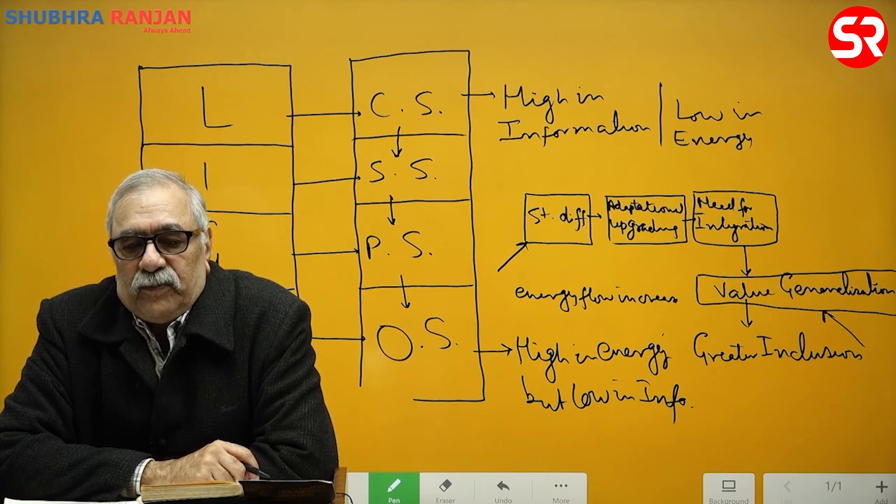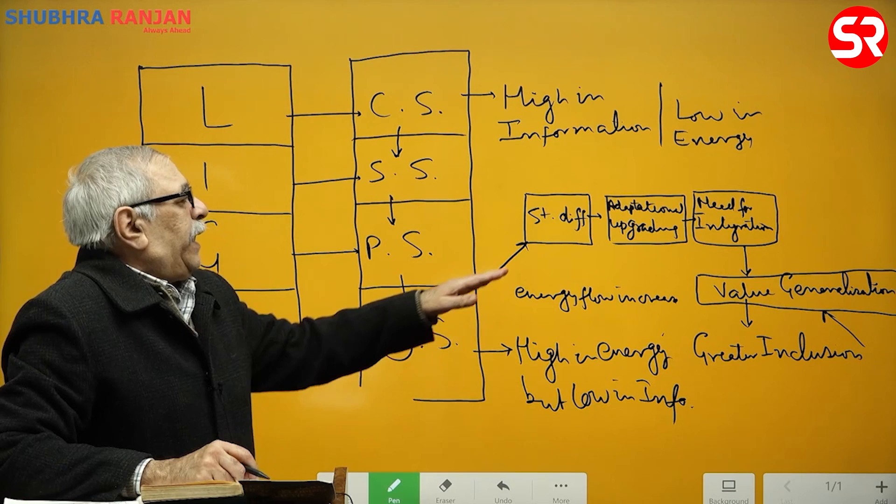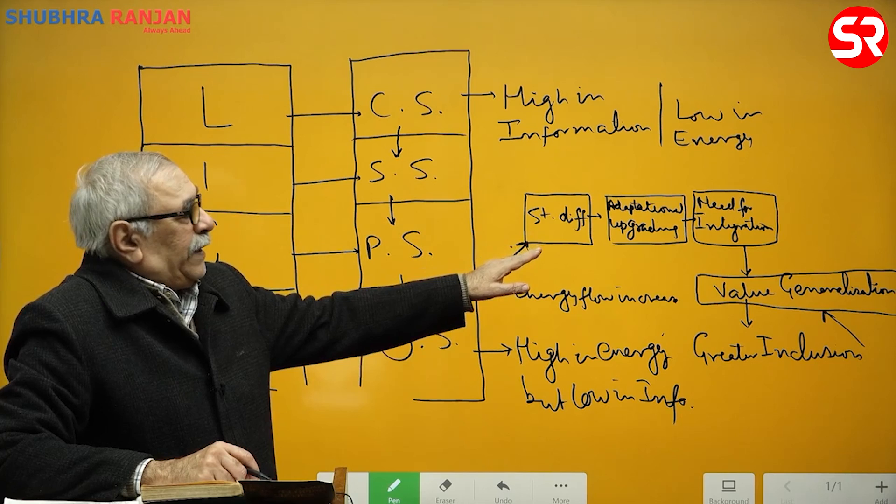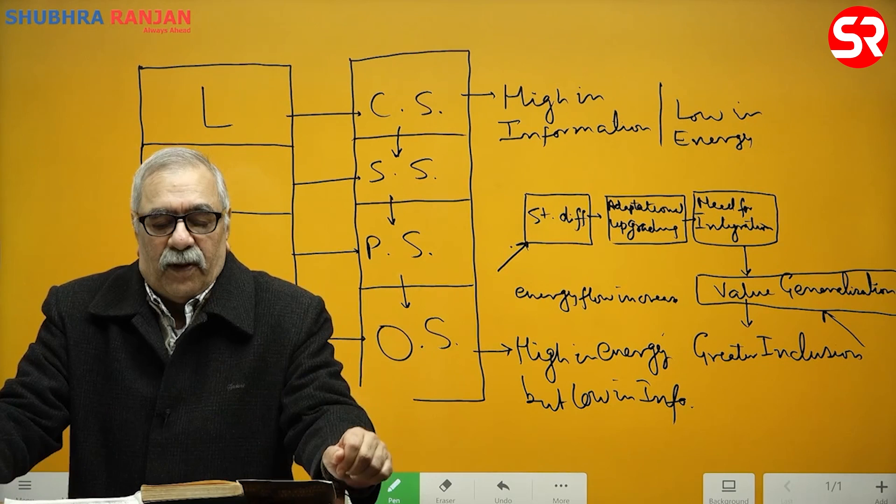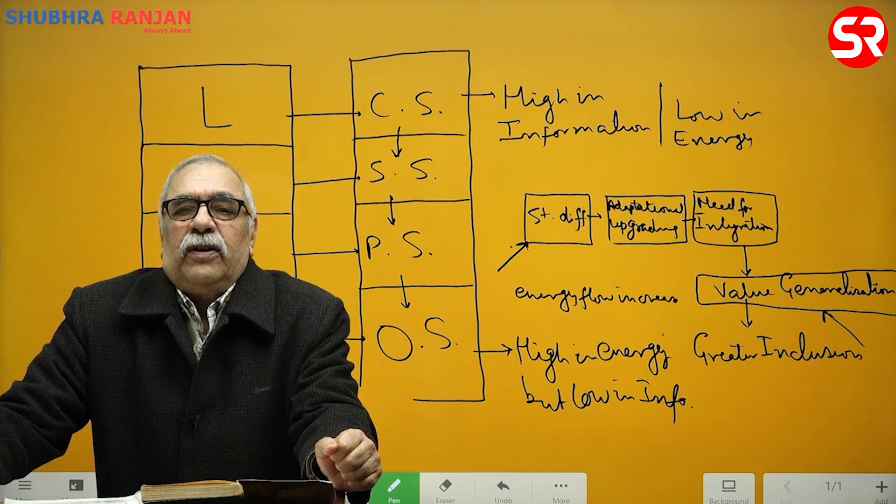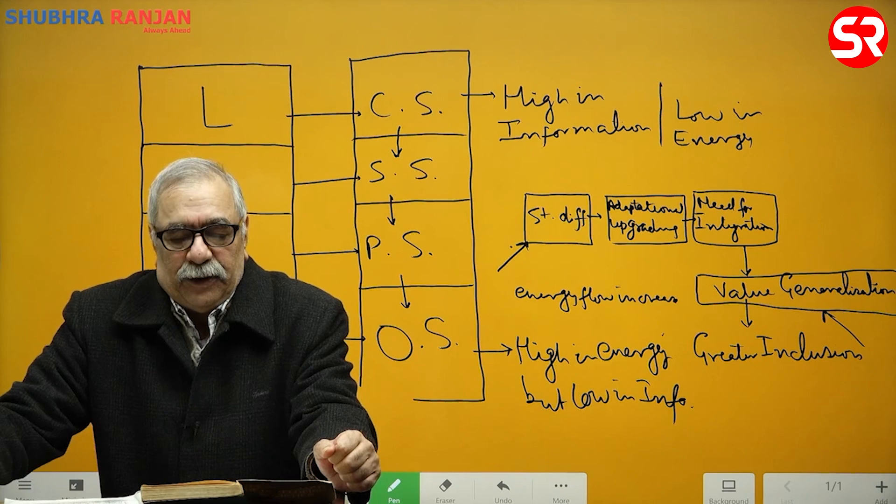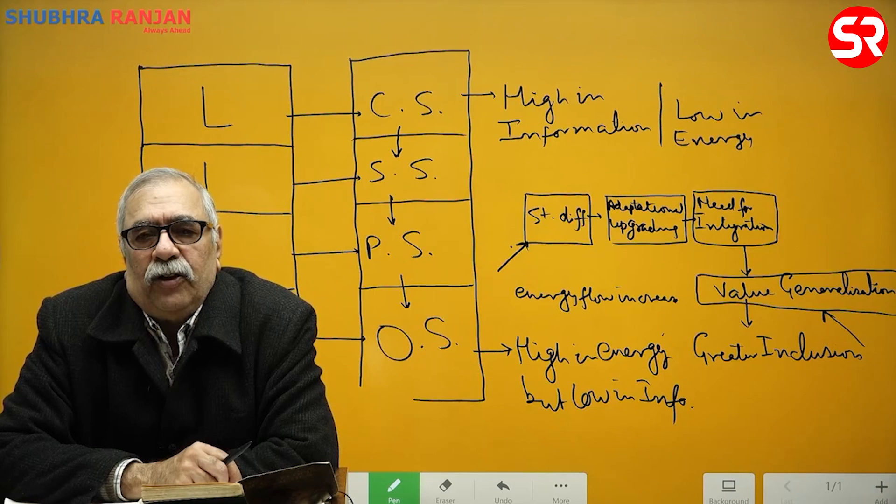So this is how society evolves. Society evolves either because of greater differentiation which is followed by value generalization, or first by value generalization which is followed by greater differentiation. So that is how there is a process of evolutionary change in society according to Parsons. This is how Parsons developed the theoretical logic for explaining change.